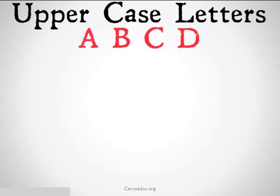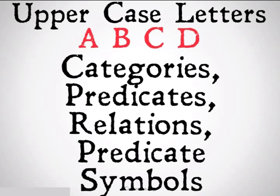We also have uppercase letters. These are going to be categories, predicates, relations, or predicate symbols. They're going to be things like is an apple, is blue, is colorful, is delicate. That's what these uppercase letters are going to represent, and they're going to each be paired, generally, with an object or a variable.